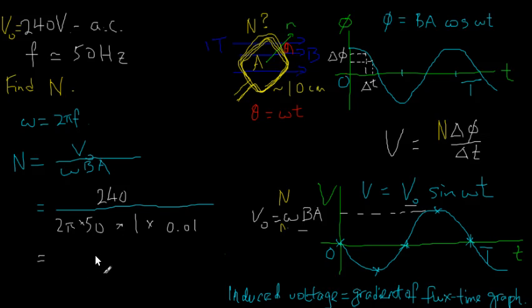Now I just need a rough answer. I'm going to take pi to be roughly equal to 3. So 2 times 50 is 100, that would multiply by 0.01 to give 1. If I take pi to be roughly equal to 3, then 240 divided by 3 is 80. So the answer is approximately 80.